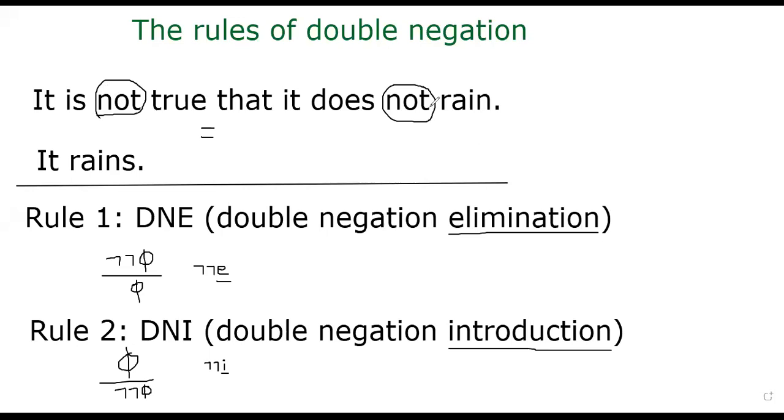So what are the rules of double negation? The first rule is double negation elimination. Suppose you have some variable phi. Phi denotes in this case it rains. So if you apply not, it doesn't rain. And then you apply one more not. So it is not true that it doesn't rain. So that's the premise. The conclusion is same as phi. As you can see here, it is not true it doesn't rain, it's same as it rains. So we can safely eliminate double negation. So that's the first rule. Double negation can be eliminated. You see here, we put double not and then E. E stands for elimination.